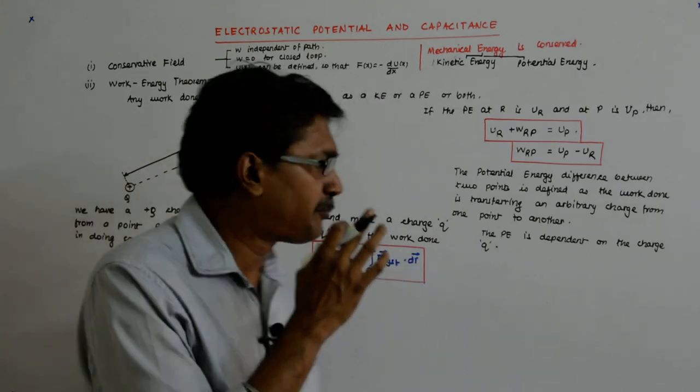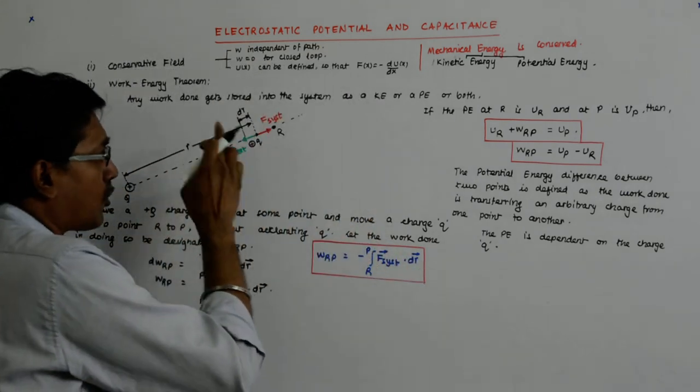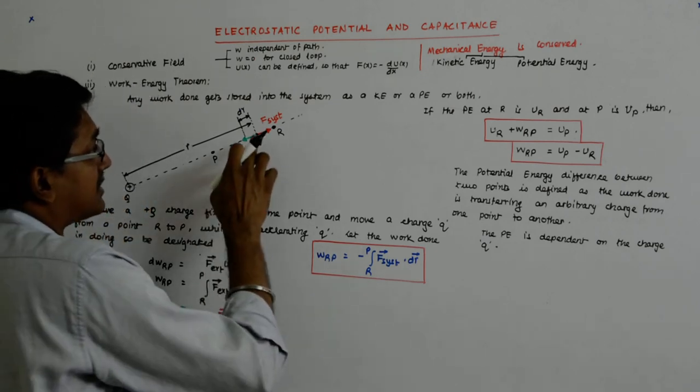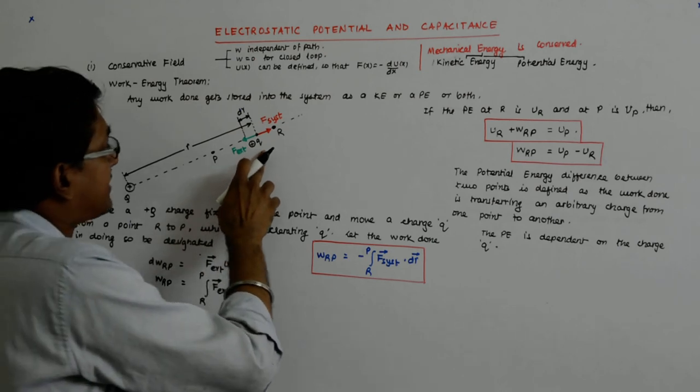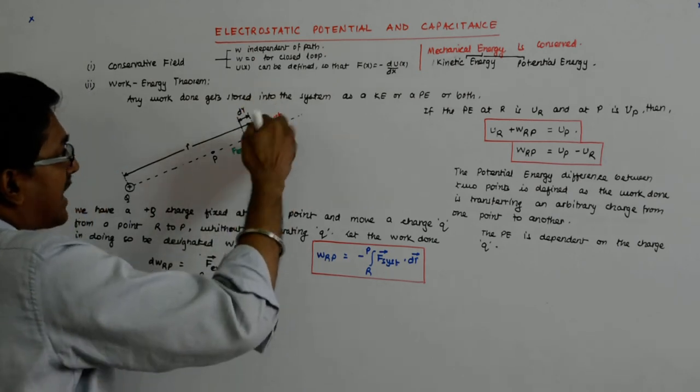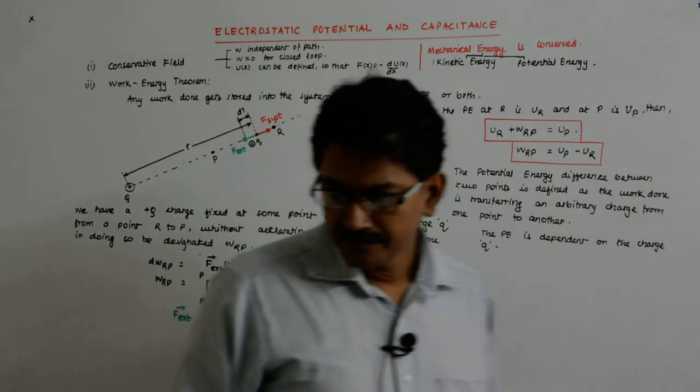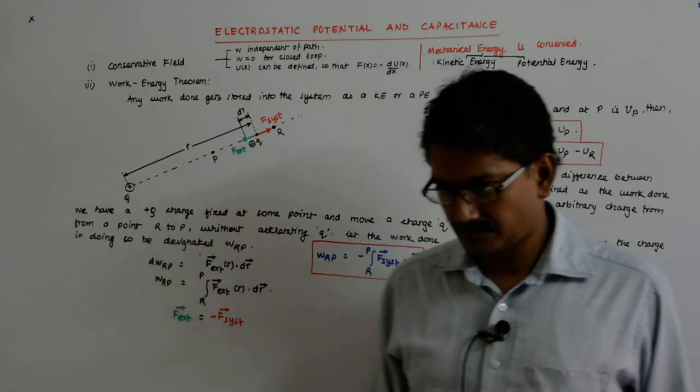Why? Because at every point, the 2Q fellow will encounter a force that is double the force encountered by the Q fellow. And hence, correspondingly, F external will have to be double. But why will it be double?